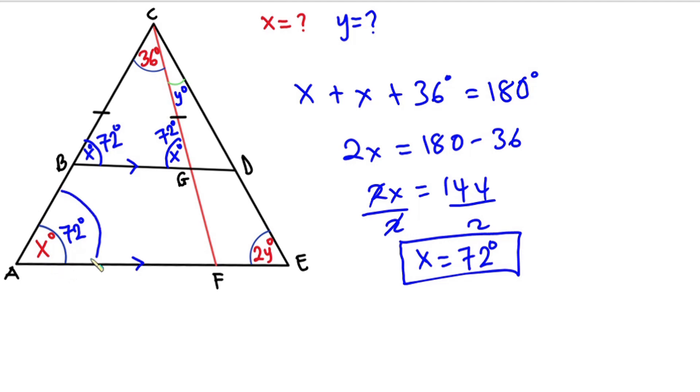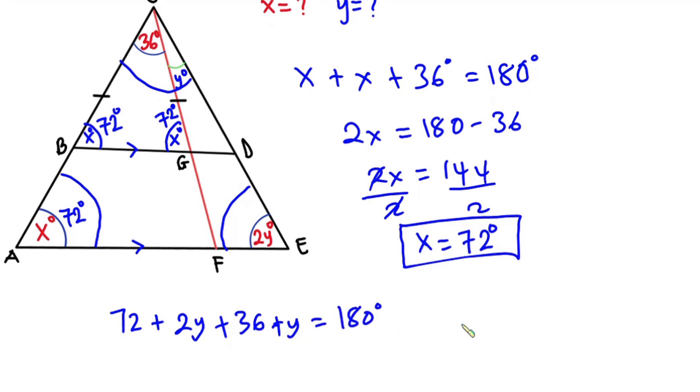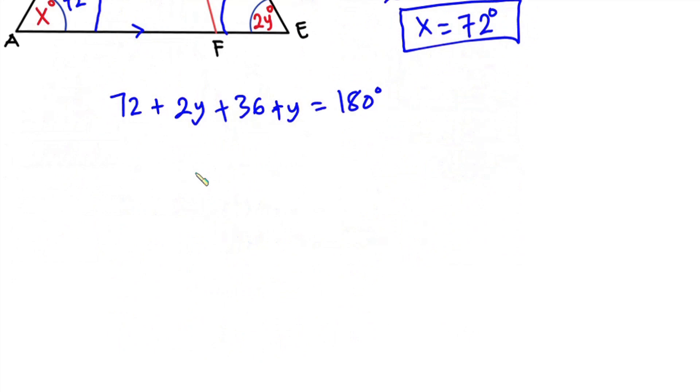Now to find y, let's go ahead and sum this whole angle and this angle over here and lastly this angle, because the sum of interior angle of a triangle is 180 degrees. So we have 72 plus 2y plus 36 plus y is equal to 180 degrees. Simplifying this, we have 2y plus y is 3y, plus 72 plus 36 is 108, and this is equal to 180.